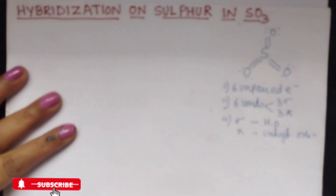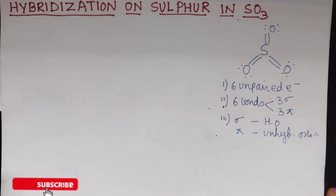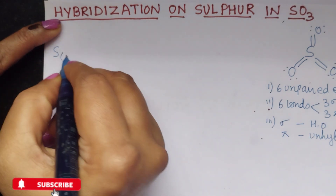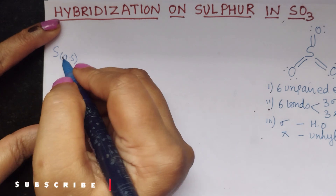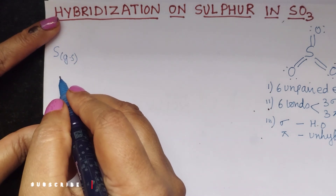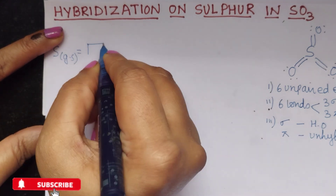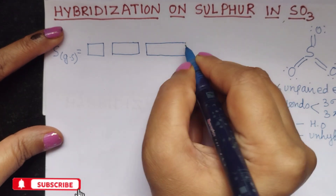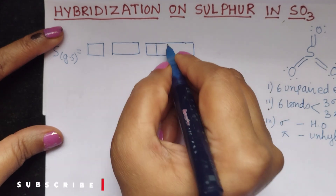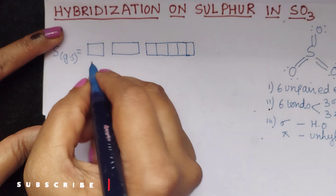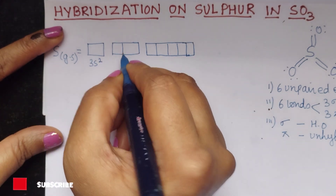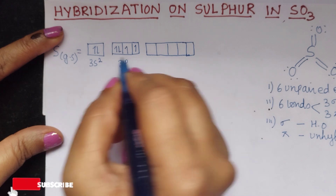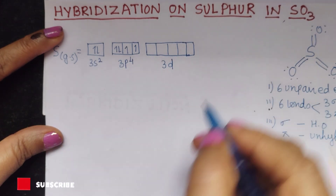Keeping all the points in mind, let us start the hybridization on sulfur. First, let us write the ground state electronic configuration of sulfur. The atomic number of sulfur is 16, so the valence electrons will be 2, 8, and 6. Let us draw the 6 electrons in the valence shell. I will keep the d orbital vacant so that if required, I can carry out the excitation. So the electronic configuration will be 3s2, 3p4, and the d orbital vacant.